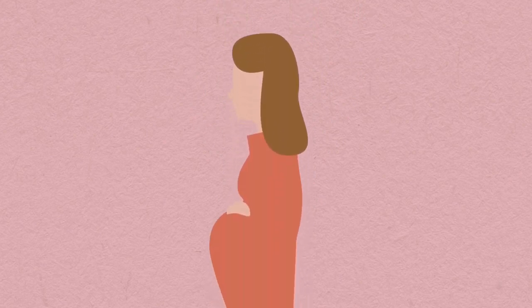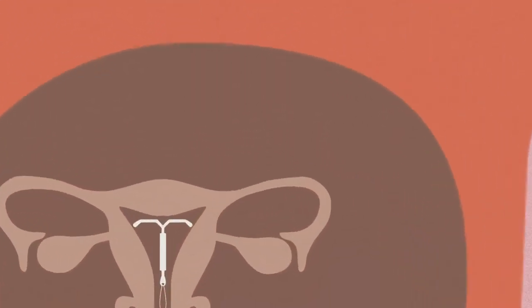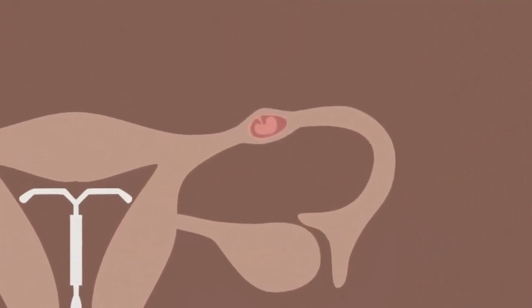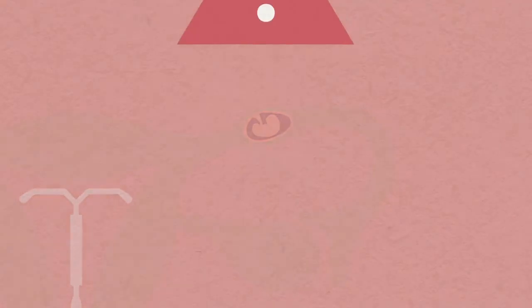In the extremely unlikely event that you fall pregnant with a device in place, there's a slightly higher risk of a pregnancy outside the womb, an ectopic pregnancy. If you think you've become pregnant with a device in, you should seek medical help urgently.